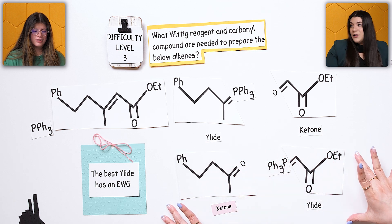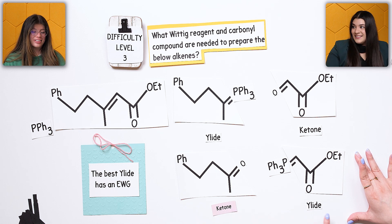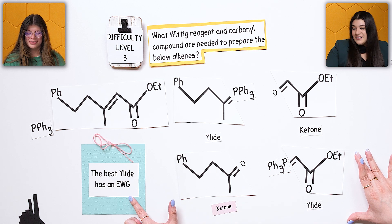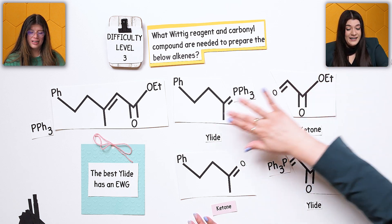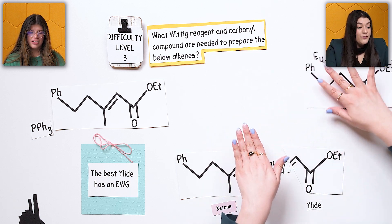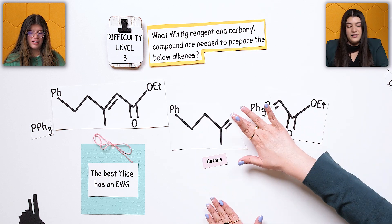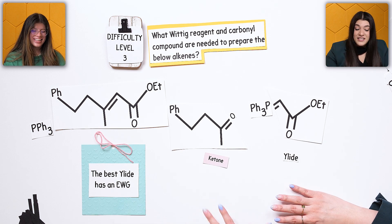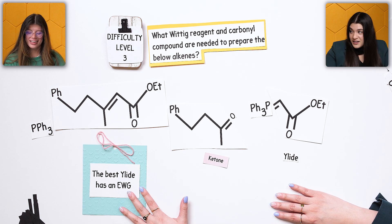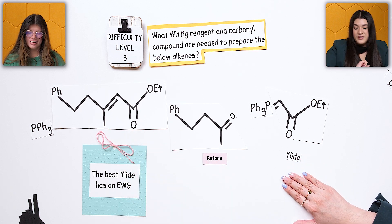In this case, this is really the only answer we would favor, because some professors may mark you down for not stating this. So the preferred option is the ylid with the electron withdrawing group — it makes the reaction a lot faster. This would be the correct retrosynthesis answer.